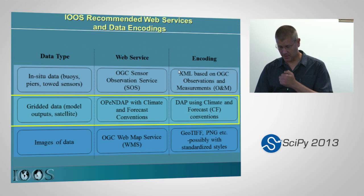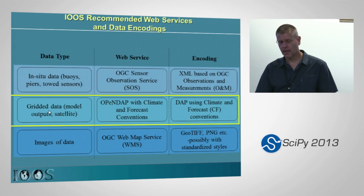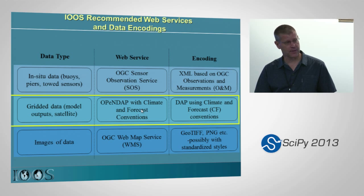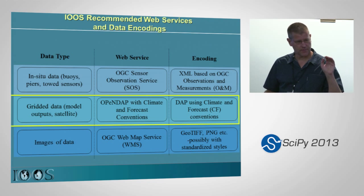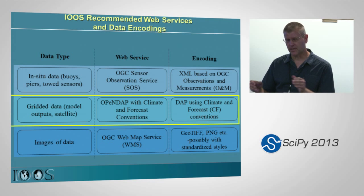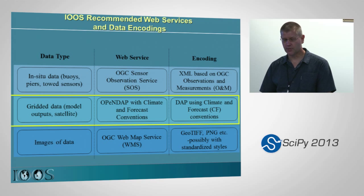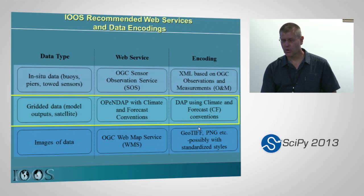The SOS service gives you back XML or CSV. For gridded data, which is what I'm going to focus on, it uses the NetCDF/OpenDAP with Climate CF conventions as you just heard about. The encoding is the NetCDF binary format — this is a service for delivering the data that Phil was just talking about through a service. So you can extract little pieces of data from these hundreds of gigabytes or terabytes of data. And then for images of data there's the Web Map Service.